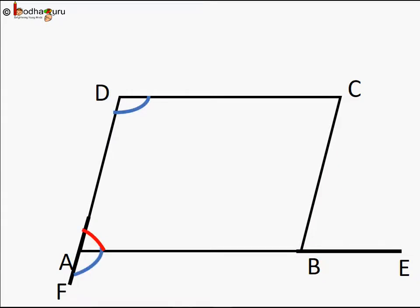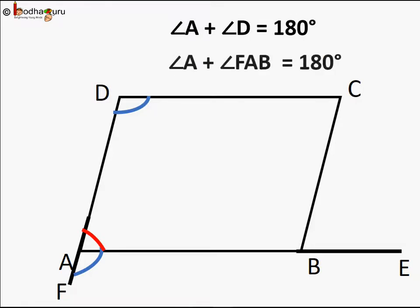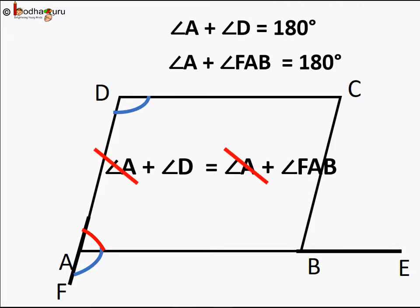Similarly, we extend DA to a point F. We know angle A + angle D = 180° (proved earlier) and angle A + angle FAB = 180°. So angle D = angle FAB, which are corresponding angles. Since DF intersects lines AB and DC, we can say AB is parallel to DC.